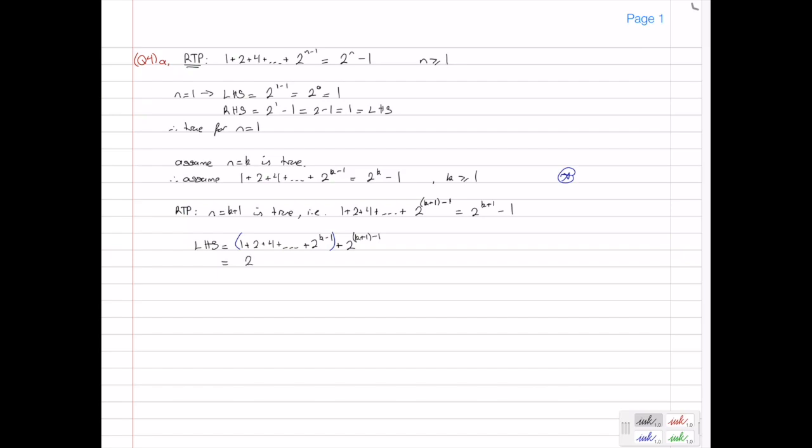So therefore, the left-hand side will be equal to 2 to the k minus 1. Let's put that in blue brackets again, just so we know what's going on. And then I have 2 to the power k plus 1 minus 1, which is just 2 to the k. Okay, so here I have 2 to the k minus 1 plus 2 to the k.